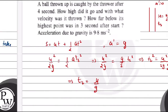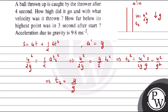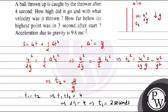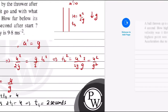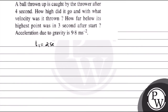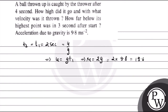So T1 = U/G and T2 = U/G — the times are equal, meaning T1 = T2. Since T1 + T2 = 4 seconds, we have 2T1 = 4, which gives T1 = 2 seconds. Therefore T2 = 2 seconds as well. Since T1 = U/G, we get U = G × T1 = 2G = 2 × 9.8 = 19.6 meters per second.